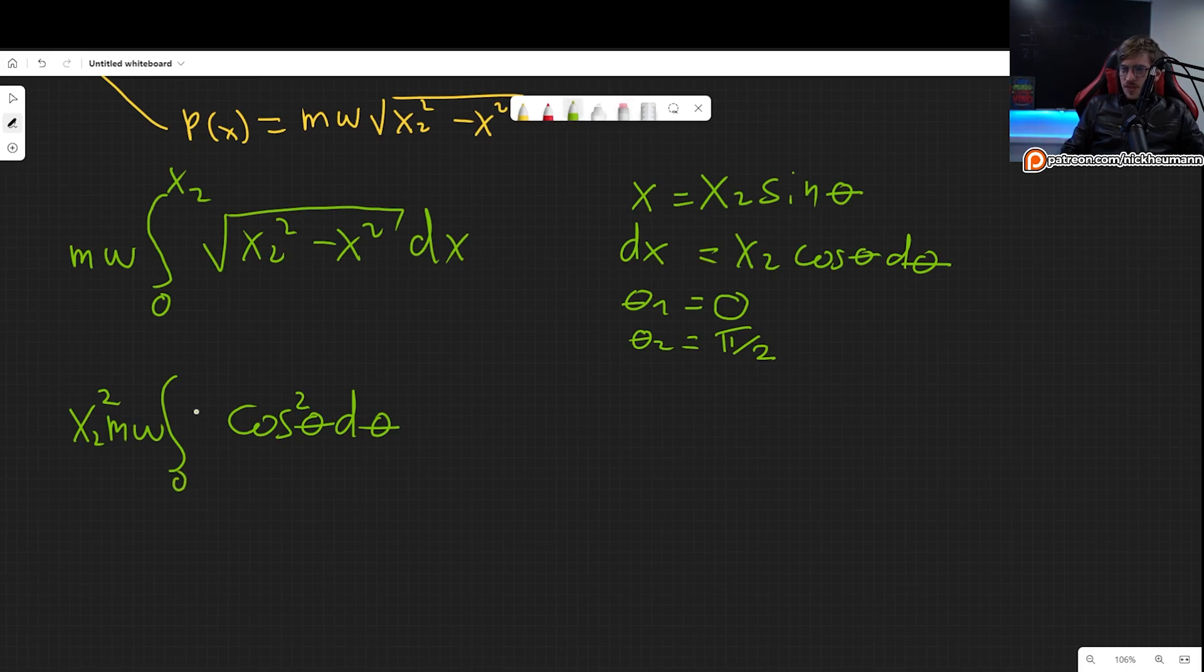So from 0 to pi over 2. Okay, so now let's keep our constants here. Now this integral can be solved very easily if we now rewrite cosine squared as 1 plus cosine of 2 theta over 2 d theta. Now of course we can take the 1 half outside. That's pretty simple.